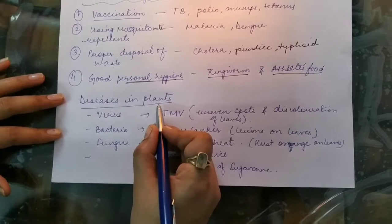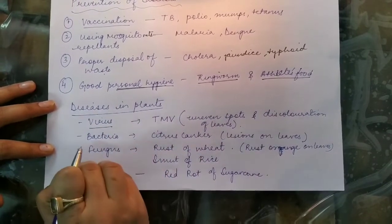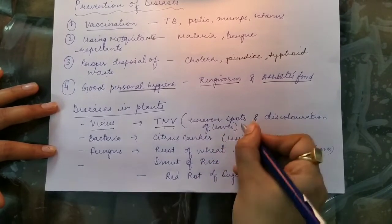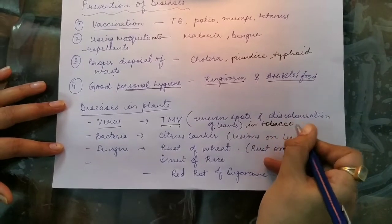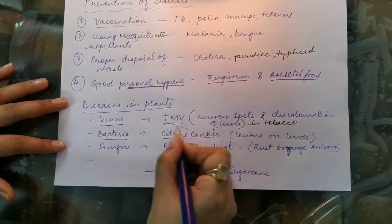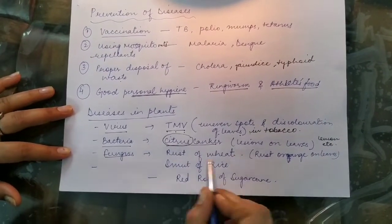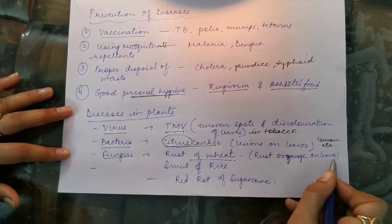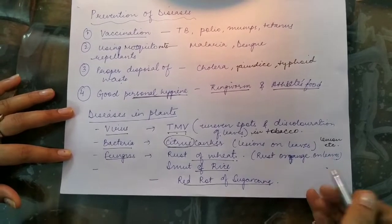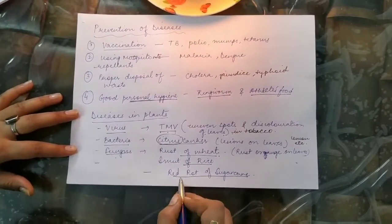Microorganisms can also cause diseases in plants. Viruses cause Tobacco Mosaic Virus (TMV), producing uneven spots and discoloration of leaves in tobacco plants. Bacteria cause citrus canker — lesions on leaves of citrus fruits like lemon and orange. Fungi cause three diseases: rust of wheat with orange patches on leaves, smut of rice with green patches on rice leaves, and red rot of sugarcane — a red vertical line between the internodes of sugarcane.